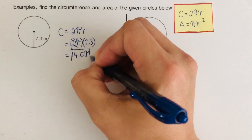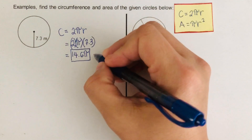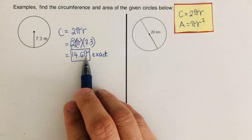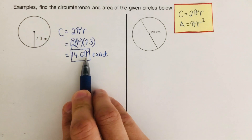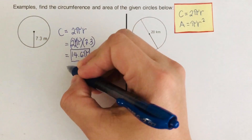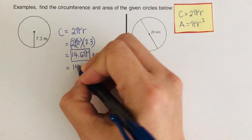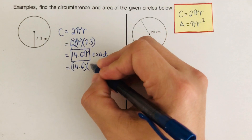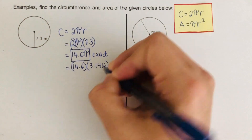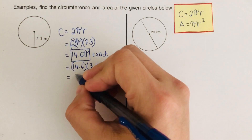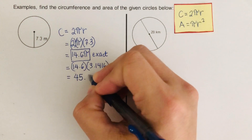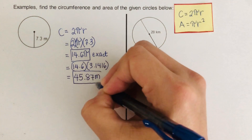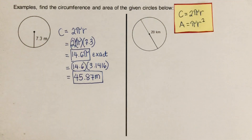We'll have two answers for this. The answer 14.6π is called the exact value — we keep it as pi without substituting the decimal. The other answer, the rounded value, is found by multiplying 14.6 by 3.1416, which rounds to 45.87 meters. So that is our circumference.